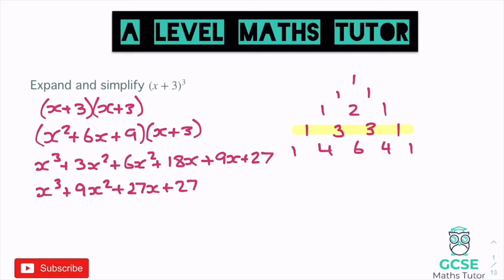With the bracket to the power of three, it's not quite as clear how we got those three lots in the middle, but you can see we had three pieces of x squared and three pieces of x. So you can kind of see where the pattern comes from: one lot of x³, one lot of the number at the end, and then three of each piece in the middle. We're going to look at how we can get there using binomial expansion and Pascal's triangle.